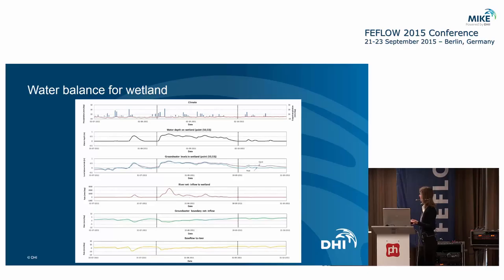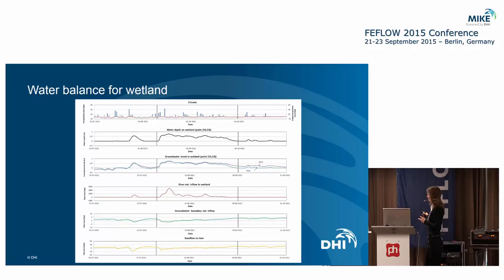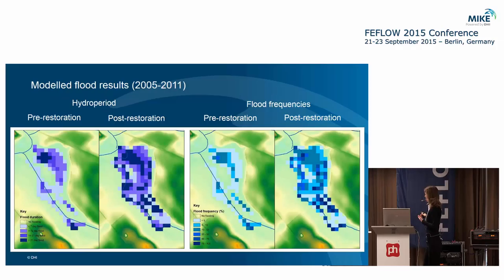To illustrate the dynamics further: you can see the water depth rising during a flood event, with groundwater levels plotted in both the peat and the sand showing reversal of gradients. During the couple of weeks of flooding there is actually a downward gradient from the peat to the sand layer. You can also see the river net inflow to the wetland and the reversal of gradients — normally you have groundwater boundary inflow, but during the flood event this reverses, as does the base flow to the river.